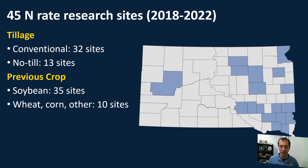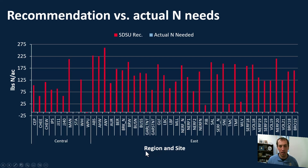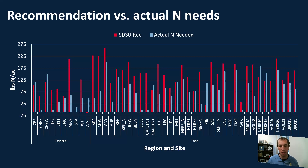Next, we're going to look at the difference between our recommendation and our actual nitrogen requirement. On the y-axis we have pounds of nitrogen per acre, and on the x-axis we have our sites in the central and eastern regions of the state. The red line represents the SDSU nitrogen recommendation, and the blue line represents the actual nitrogen need. We want these two lines to line up as closely as possible — that means we're being accurate. Some sites do quite well, while others show a considerable gap between the recommendation and what was actually needed.